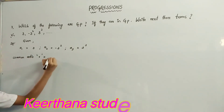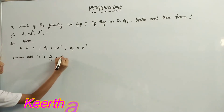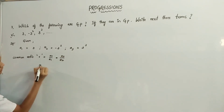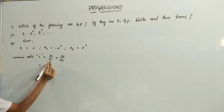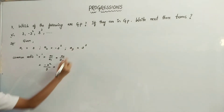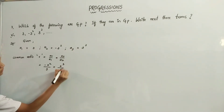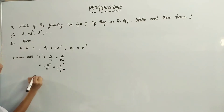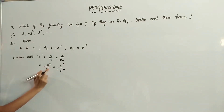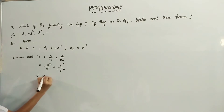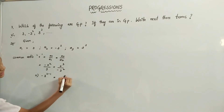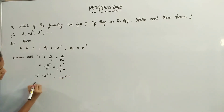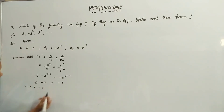R equals A2 by A1, equals A3 by A2. That implies A2 is minus 3 squared by A1 is 3, equals A3 is 3 cubed by A2 is minus 3 squared. When bases are equal, powers should be subtracted: minus 3 to the power (2 minus 1) equals minus 3 to the power (3 minus 2). That implies minus 3 equals minus 3. Therefore R equals minus 3.